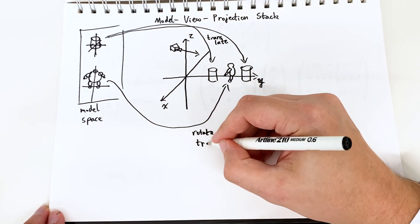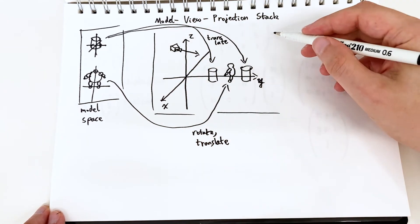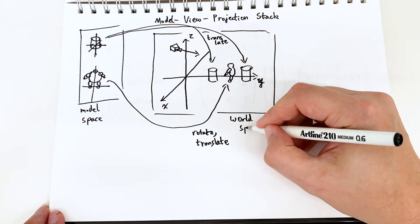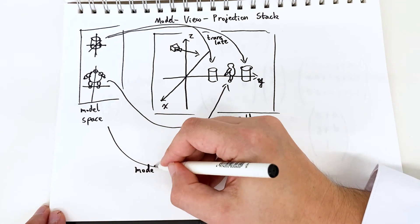The next step is we want to get the perspective of the camera. In other words we want to make the camera the origin. This is what's called transforming into view space with the view transform.